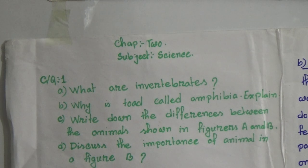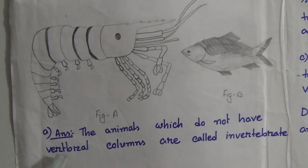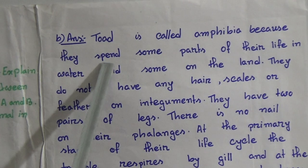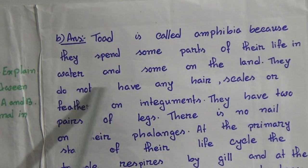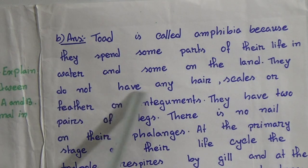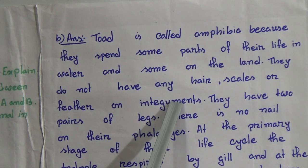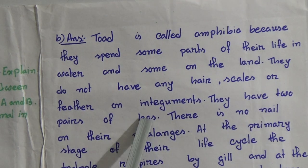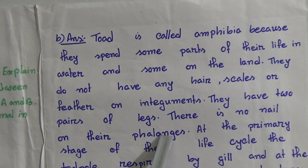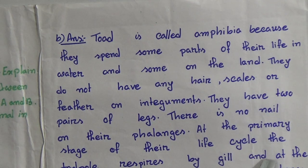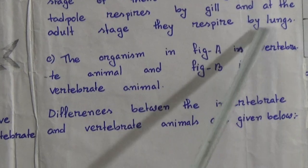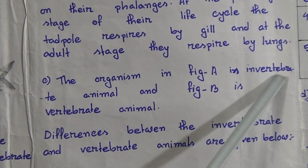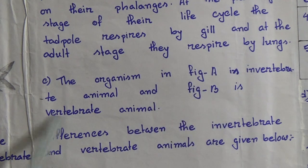Answer to question (a): Animals which do not have a vertebral column are called invertebrates. Answer to question (b): Toad is called amphibia because they spend some parts of their life in water and some on land. They do not have any hair, scales, or feathers on their integument. They have two pairs of legs and no nails on their phalanges. At the primary stage of their life cycle, the tadpole respires by gills, and at the adult stage they respire by lungs. Answer to question (c): The organism in Figure A is an invertebrate and the animal in Figure B is a vertebrate.